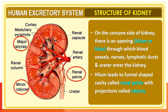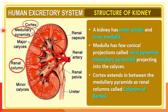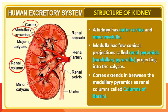The hilum on the concave side leads to a funnel-shaped cavity called the renal pelvis, with projections called calyces divided into major and minor calyces. The kidney has an outer cortex and inner medulla. The medulla has conical projections known as renal or medullary pyramids projecting into the calyces. The cortex extends between the medullary pyramids as renal columns called the columns of Bertini.